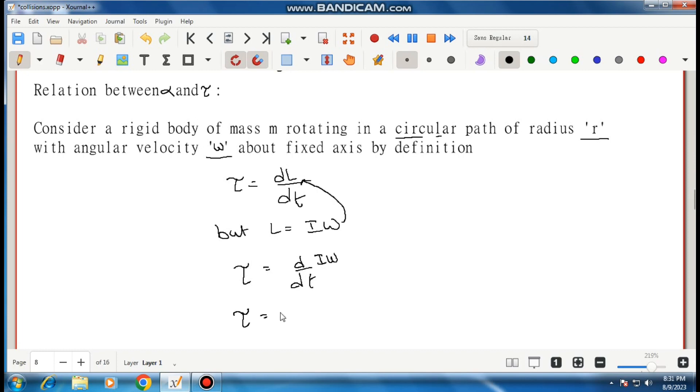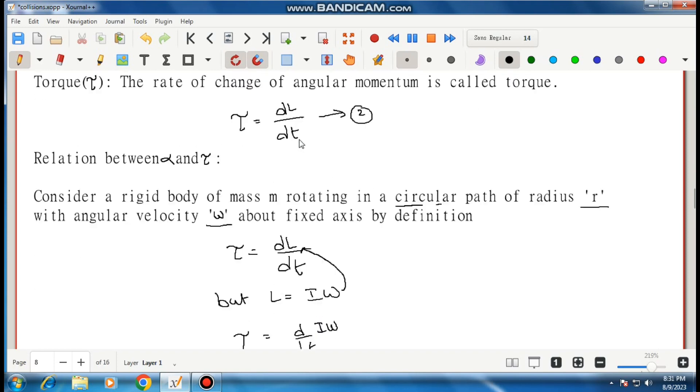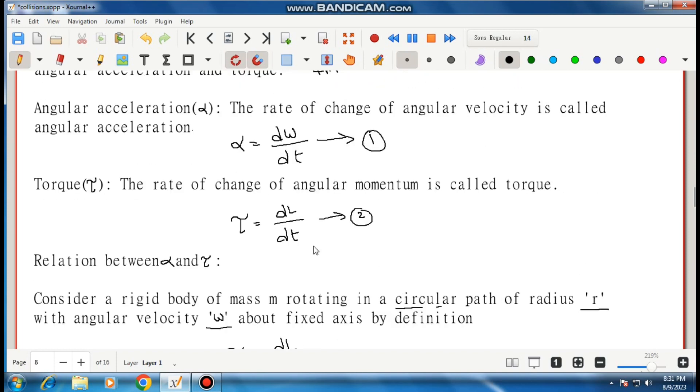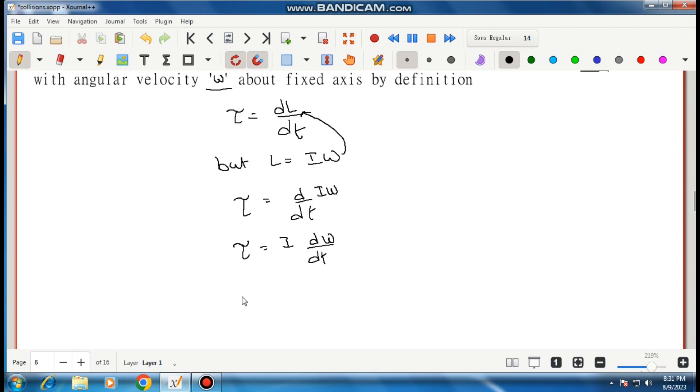Tau is equal to I into d by dt of omega. But from equation one, d omega by dt, d omega by dt is called alpha. Tau is equal to I into d omega by dt means alpha.